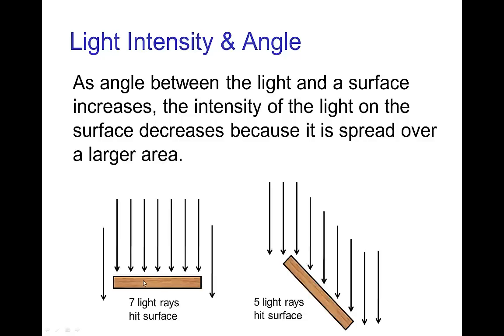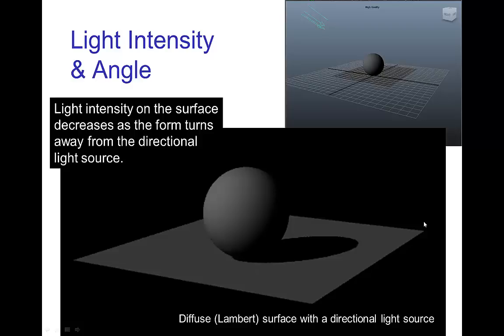So here where the surface is facing the light source, we have more light rays hitting it, whereas when it's turned away from it, there's not as many light rays, and so it's not as brightly illuminated. Here's an example of a directional light source shining on a diffuse sphere and a diffuse floor. On the sphere, we see that the part of the sphere that is facing the light source is brightest.